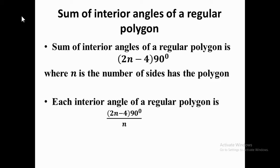In this video I'm going to talk about some theorems in polygons. We have two theorems in polygons which every student must know and how to use them accurately to solve problems. Interior angles in a polygon — the number of sides the polygon has determines the number of angles it will have. For a triangle we have three angles inside; for a quadrilateral we have four angles, and so on.